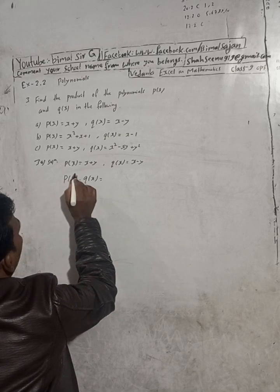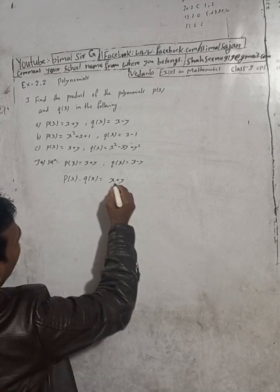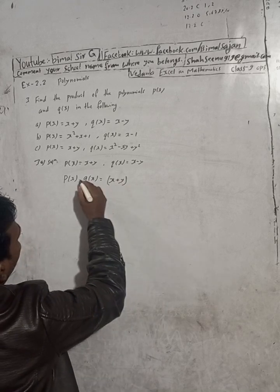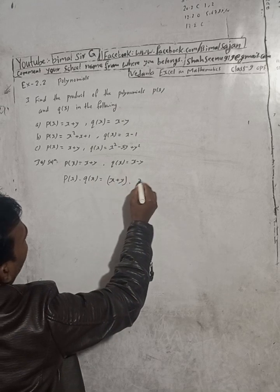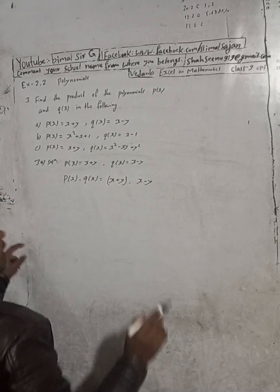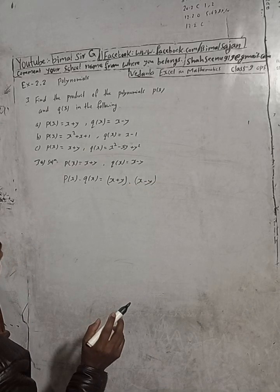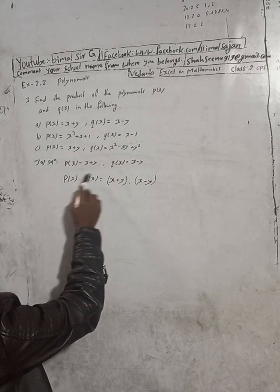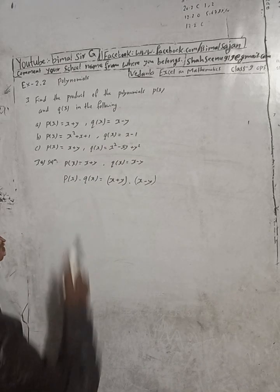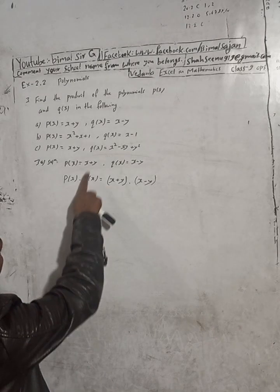In place of P(x), write x plus y in a bracket, then dot to multiply, and Q(x) is equal to x minus y, also in a bracket. So we have (x plus y) multiplied by (x minus y).